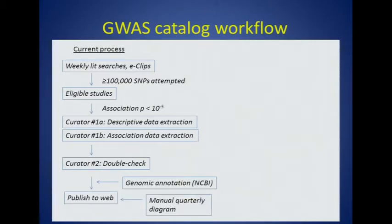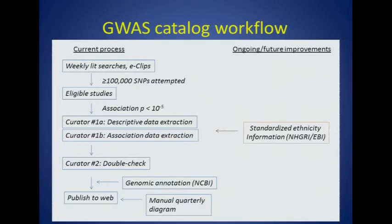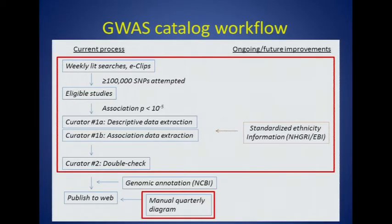We also have a manual quarterly diagram which is done painstakingly by hand by Terry and Daryl. Every quarter when new associations are added, they work together to literally hand place each new dot on that diagram. As part of our ongoing improvements, one thing we're working on now is developing a framework to more consistently and in an expanded way collect standardized ethnicity information on the curation side of things. Everything in red is by and large all manual — it's very time intensive — and we hope to increase our efficiency through informatics and other developments.